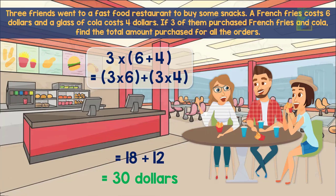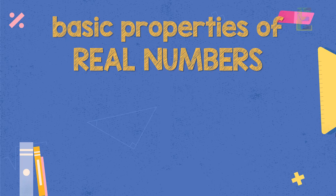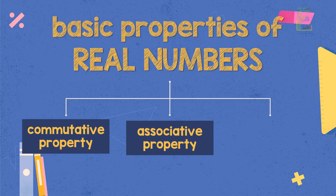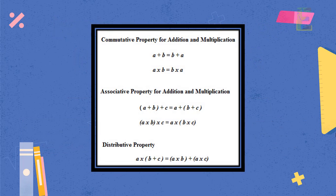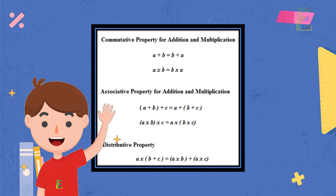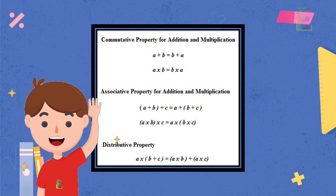So that's the basic properties of real numbers. A quick review: there are 3 basic properties of real numbers — the commutative property, the associative property, and the distributive property. That's it for today. I hope you learned a lot about the basic properties of real numbers. You can also watch our other video tutorials on our channel. Once again, this is EarthPen — learning has never been this easy, for anyone, anywhere. Have a nice day.